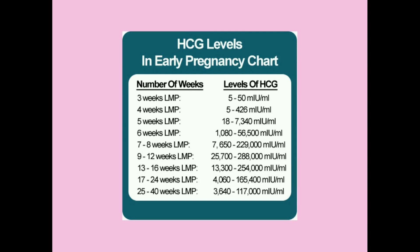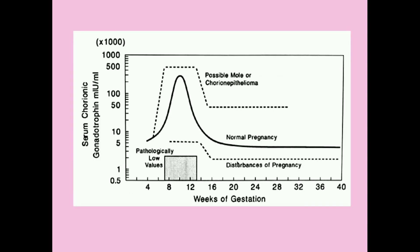This chart shows the HCG levels we expect based on gestational age. Our patient was nine weeks past her last period, so we would expect her to be between 25,000 and 288,000 milli-international units per milliliter. HCG levels peak around week 10, then come down. If they are above where they should be, it's possibly a molar pregnancy.